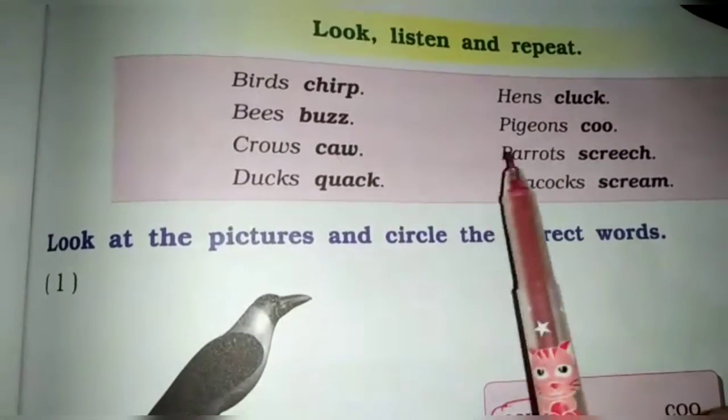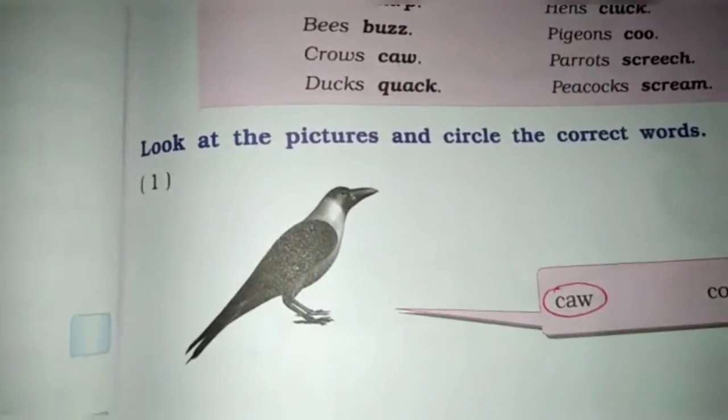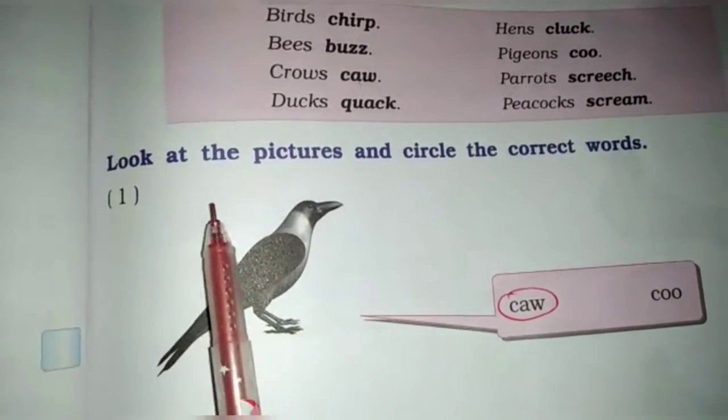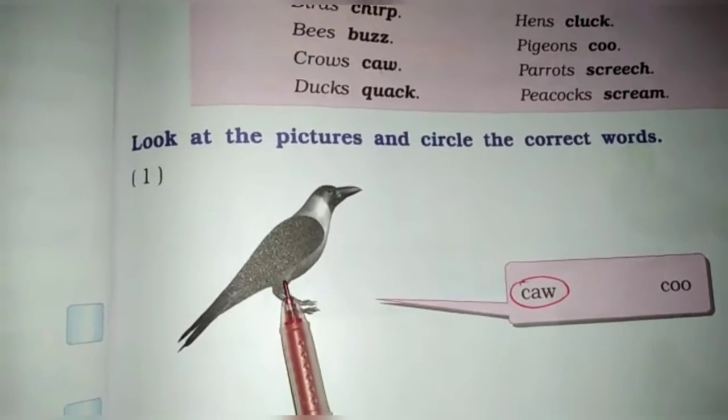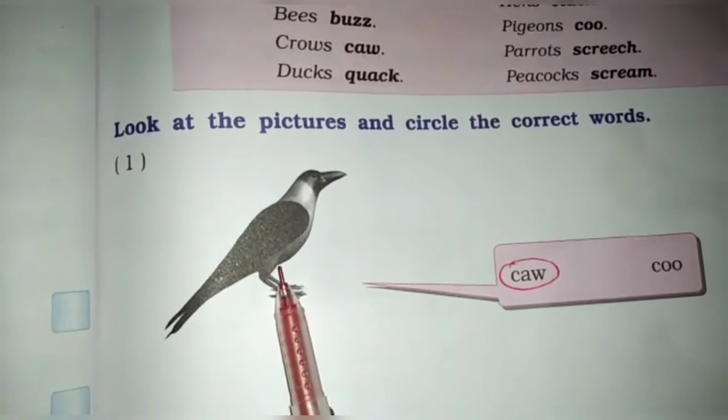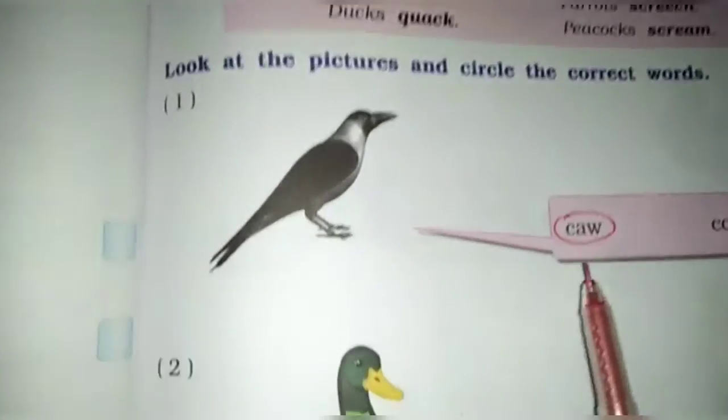So आपको यह learn भी करने हैं. किसके आवाज को क्या बोला जाता है? Now exercise. Look at the pictures and circle the correct words. What is this? It is a crow. So crow sound is caw.